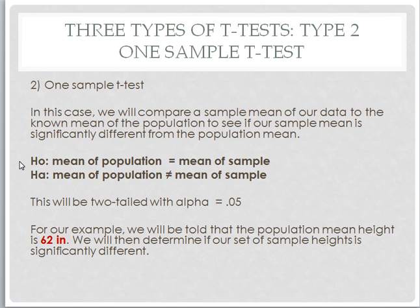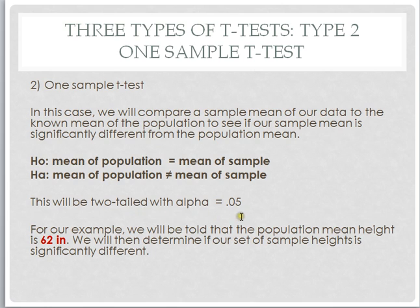Our null hypothesis is that the mean of the population is not significantly different than the mean of our sample. The alternative is that the mean of the population and the mean of our sample are actually significantly different. Again, we're going to use a two-tailed test, and alpha is going to be 0.05.